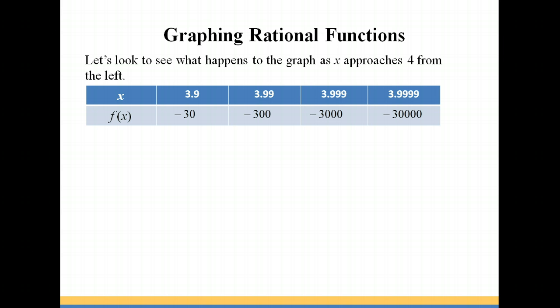And then we'll jump all the way to negative 30,000 as we close in on 4. So as you can see, these numbers are approaching negative infinity. So our graph should be pointing down to negative infinity on the left side as we head in toward 4.